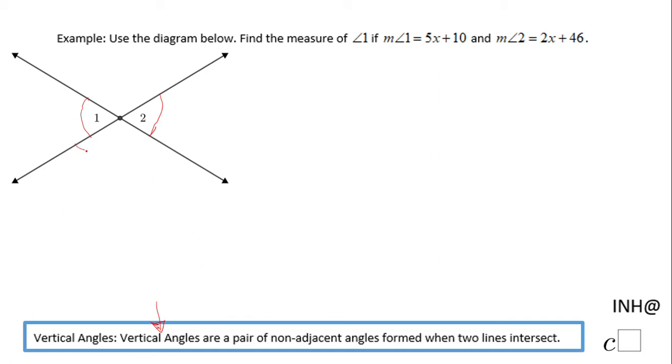Now you may say what about these two guys? Let me call this one 3 and then we call this one 4. These two angles also are vertical angles and they are congruent.